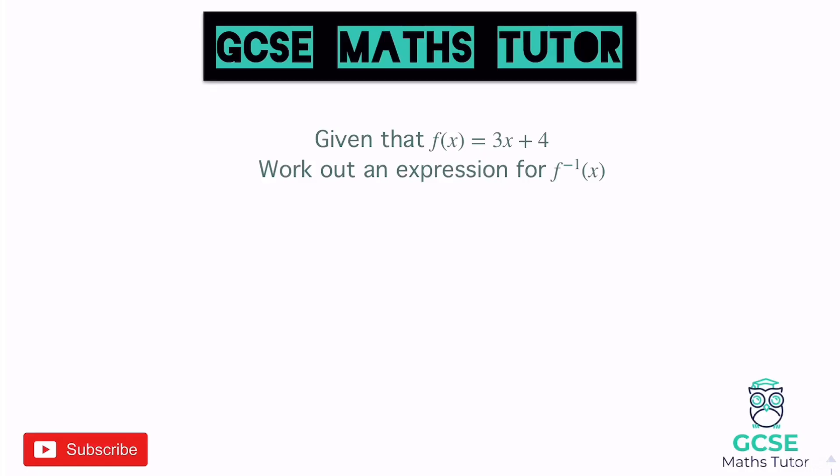The inverse function of x just means essentially what is the opposite or the reverse of this function. The function at the moment, 3x plus 4, just means that whatever number you put in, it gets multiplied by 3 and then you add 4. And if we think logically, the reverse of that would be taking away 4 and dividing by 3. But we're just going to look at a process for actually working out a method for writing this expression for the inverse function.